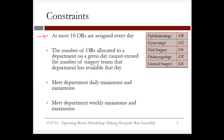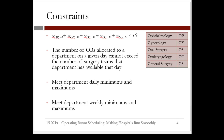That means that X for ophthalmology on Monday, plus X for gynecology on Monday, plus X for oral surgery on Monday, plus X for otolaryngology on Monday, plus X for general surgery on Monday, must add up to something less than or equal to 10. We would have a similar constraint for Tuesday, Wednesday, Thursday, and Friday.